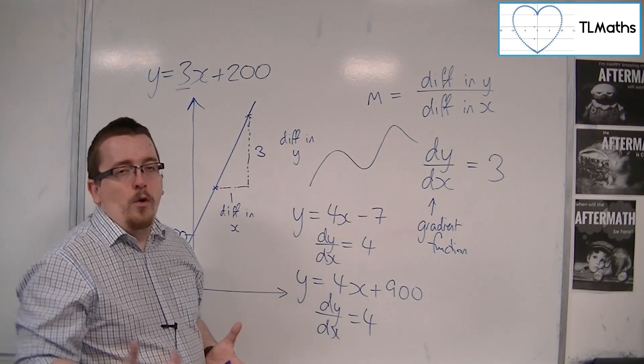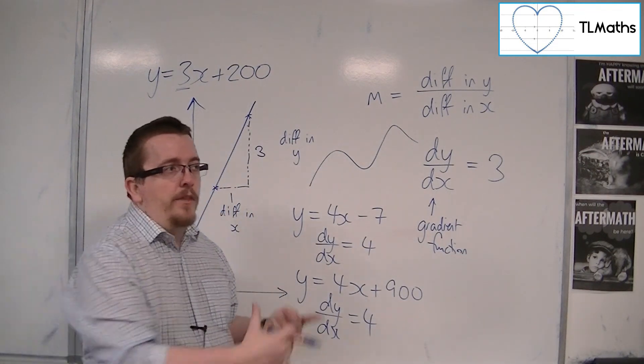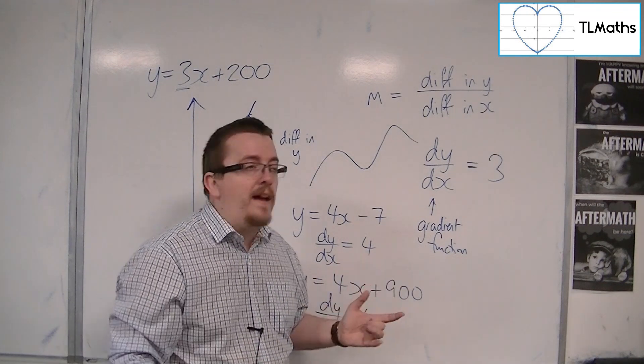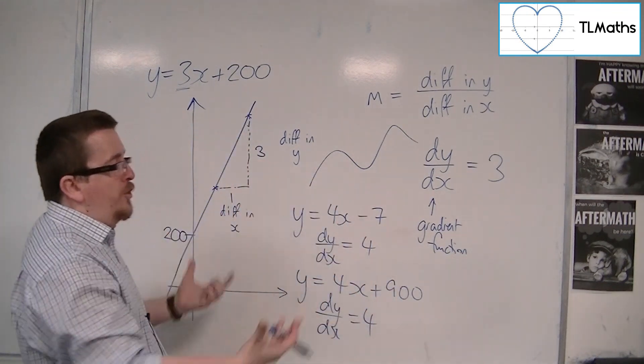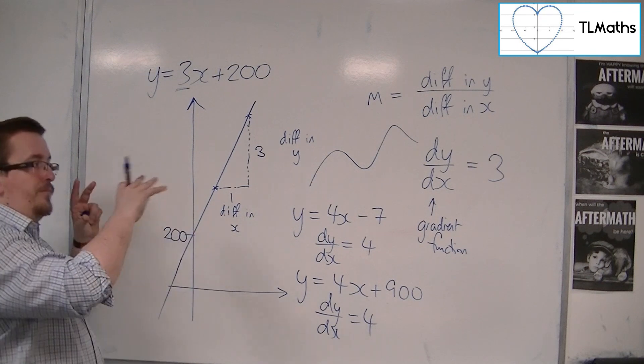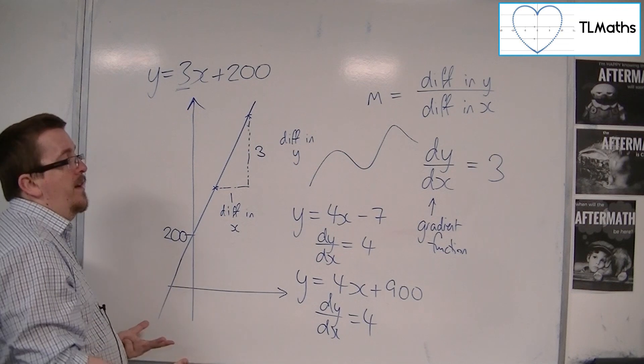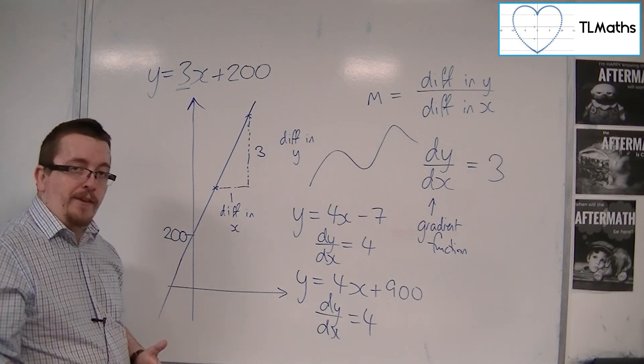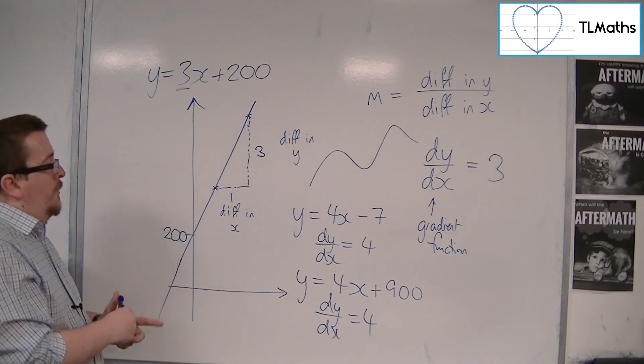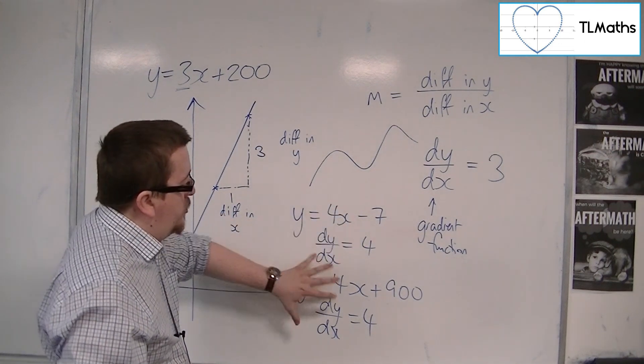Instead, it will be a function of x. It will be something like 3x, for example, or 3x squared, or 3 minus x, or 3 sine x, or something like that. It will be a function of x rather than just a number.